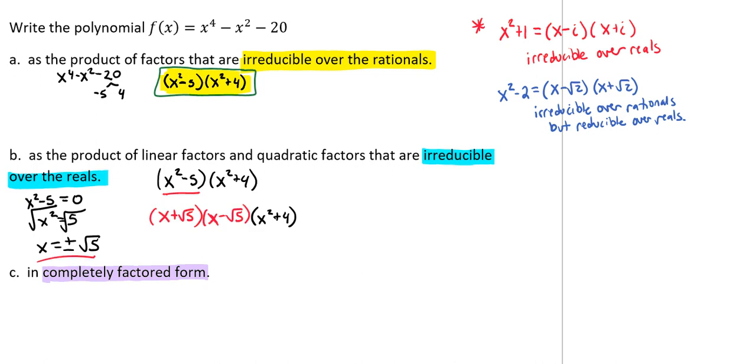We can then break down our x^2 - 5 to (x + √5)(x - √5), and our x^2 + 4. Now we have shown that we are irreducible over all of the real numbers.